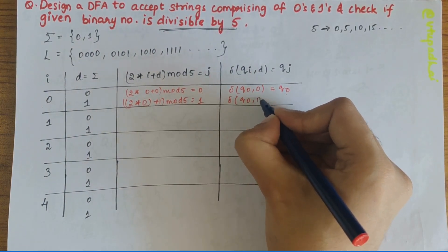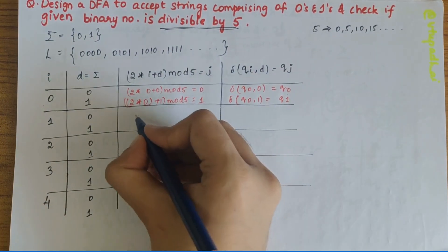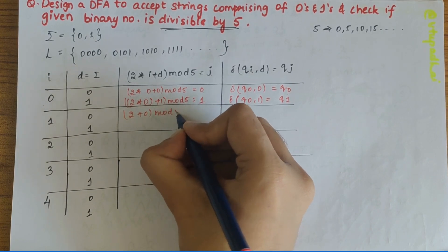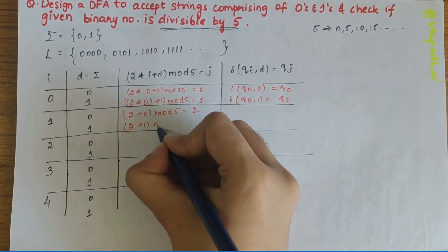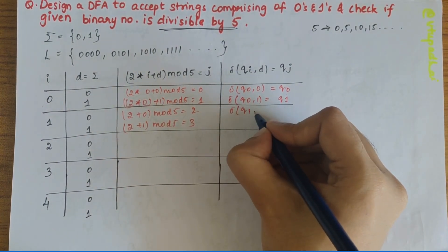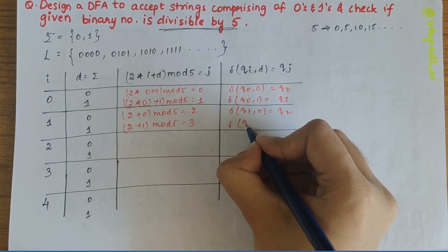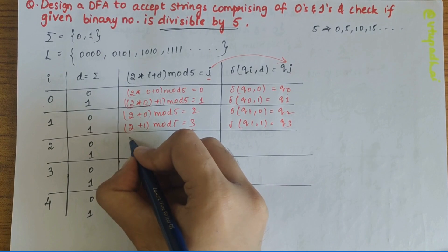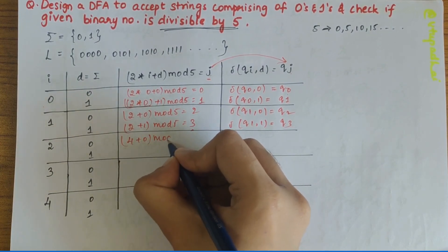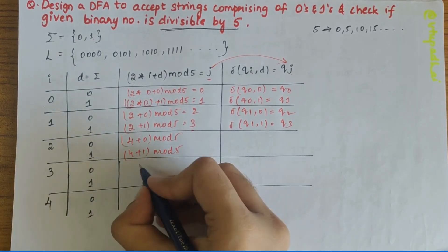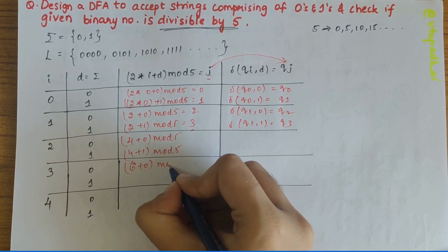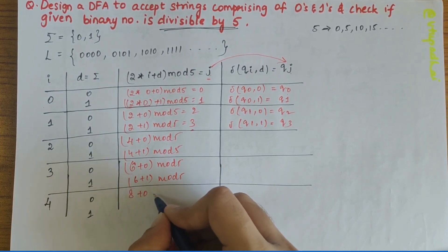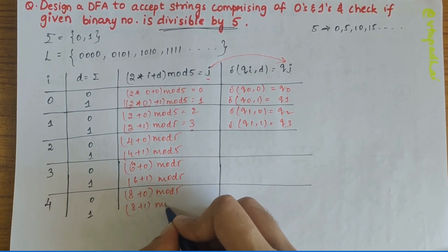Continuing: δ(q1, 0) = q2, since (2×1 + 0) mod 5 = 2. And δ(q1, 1) = q3, since (2×1 + 1) mod 5 = 3. For I=2: (2×2 + 0) mod 5 = 4 mod 5 = 4, and (2×2 + 1) mod 5 = 5 mod 5 = 0.